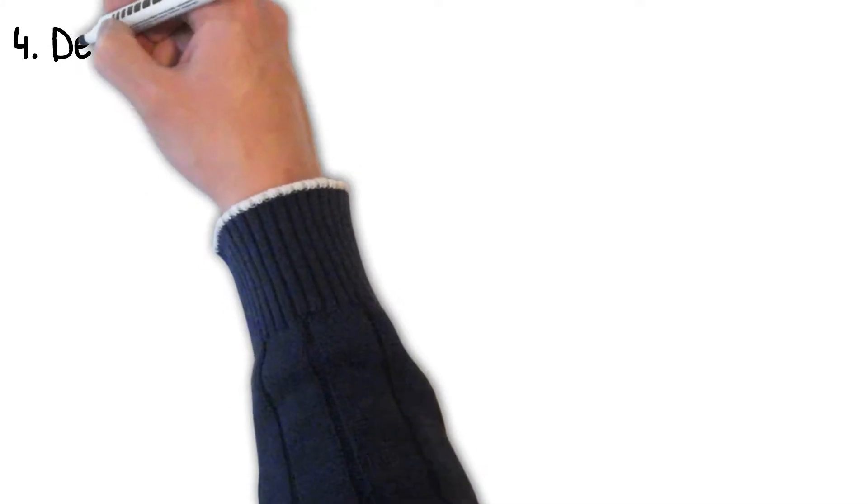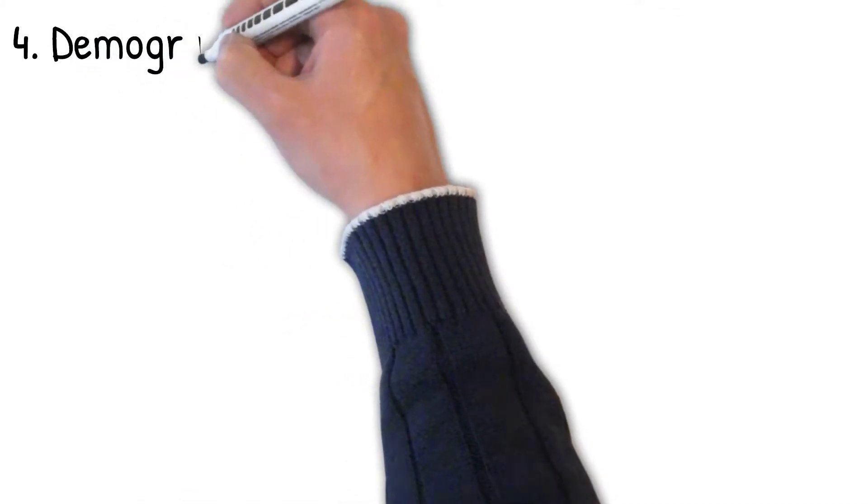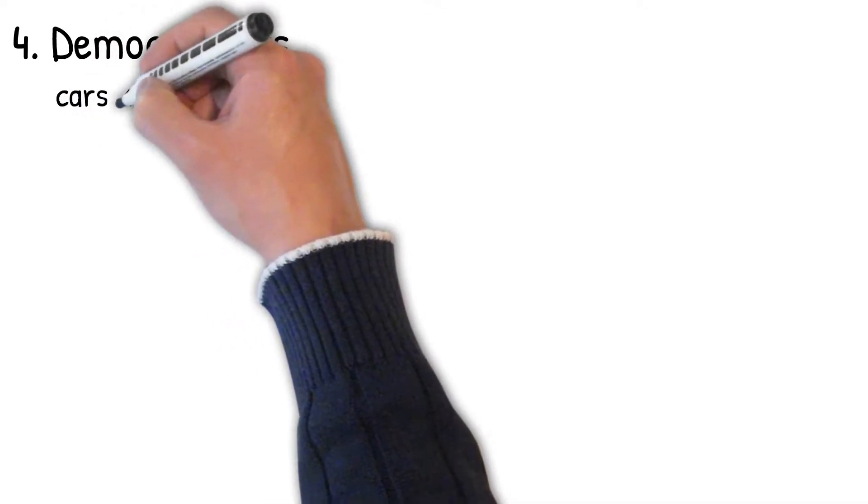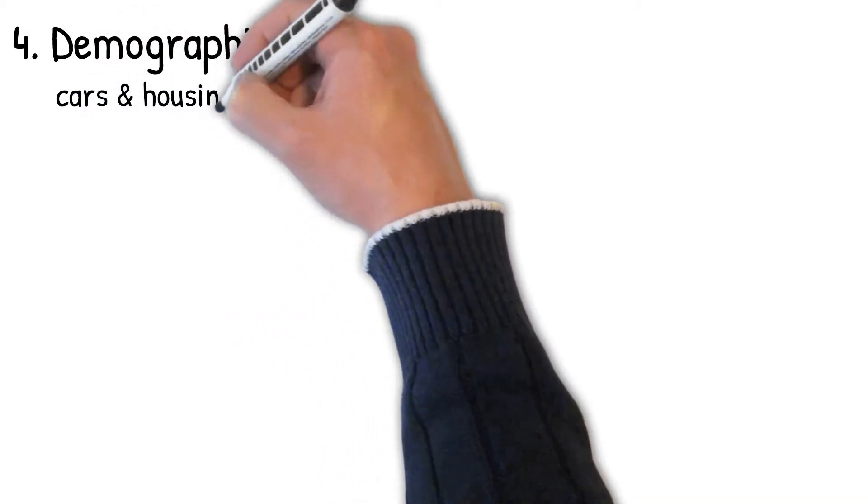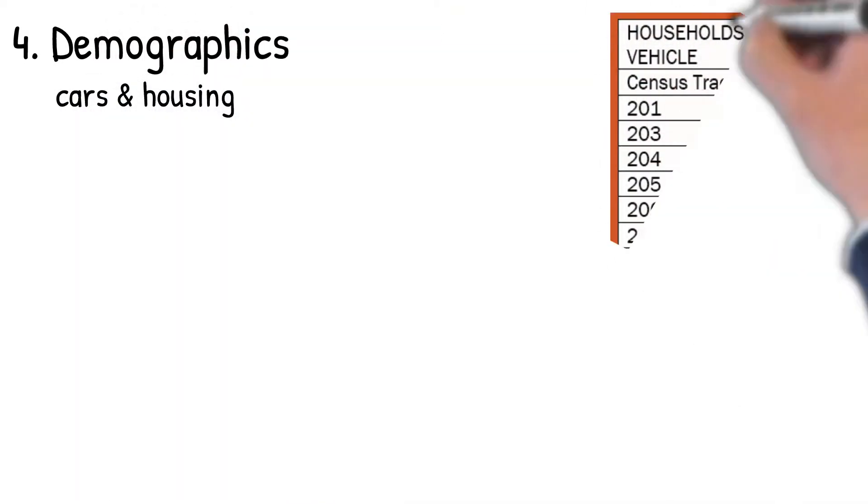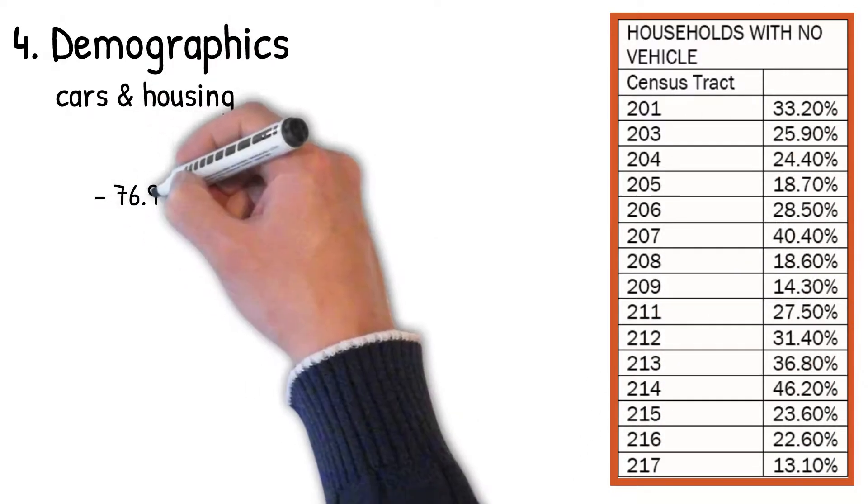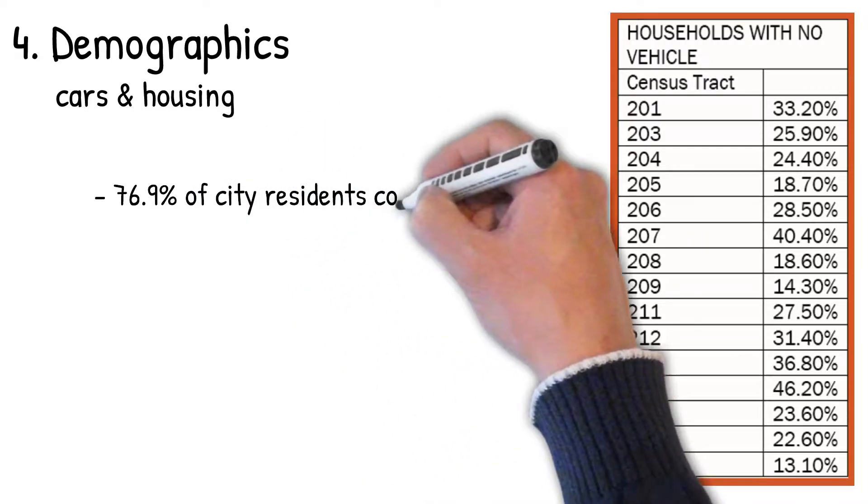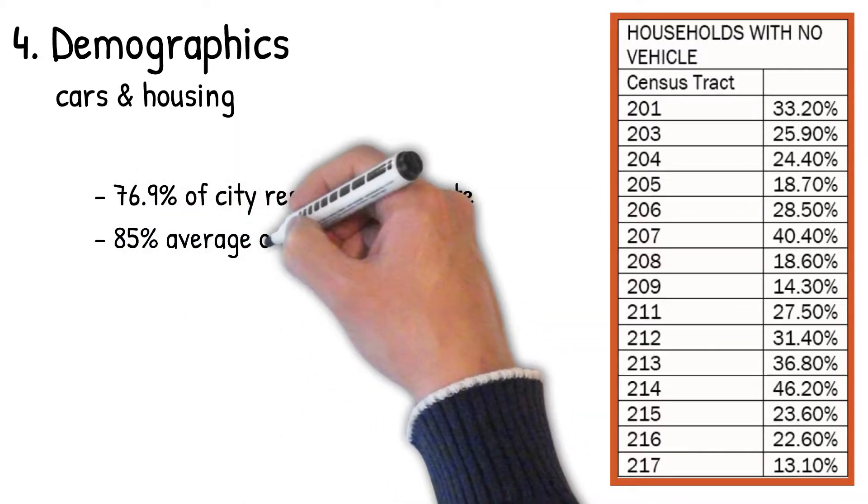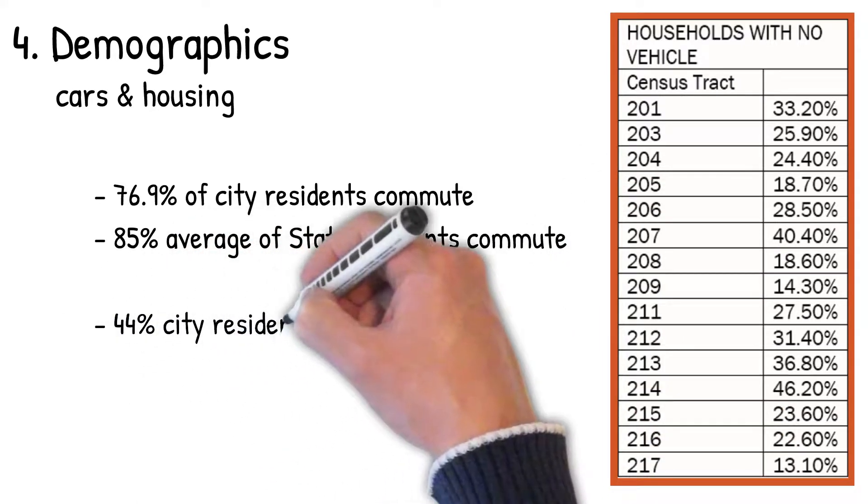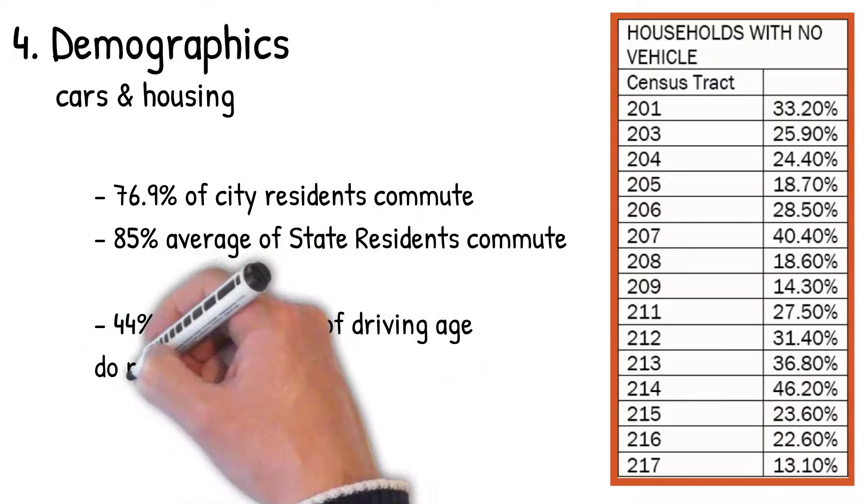One subsection of this is looking at cars and housing. This is a sidebar in the comp plan, something to note because of how our physical structure is in Harrisburg. 76.9% of city residents commute, 85% average of state residents commute, and 44% of city residents of driving age do not own a vehicle. This is interesting to see. You can look at the census tracts and the percentages that are there and which ones are high or low.